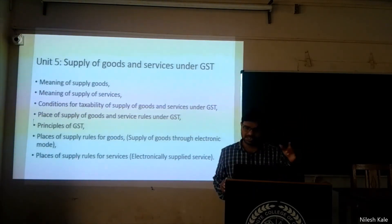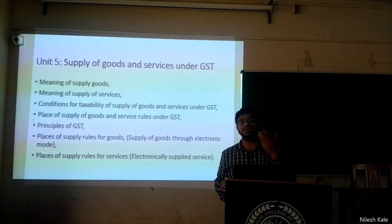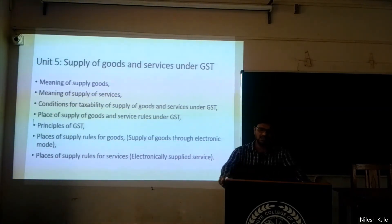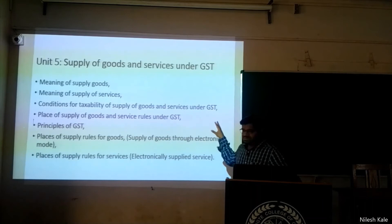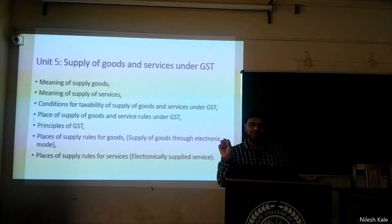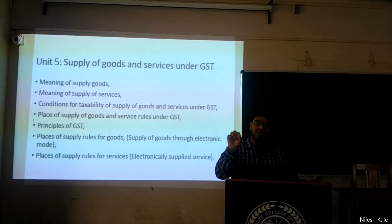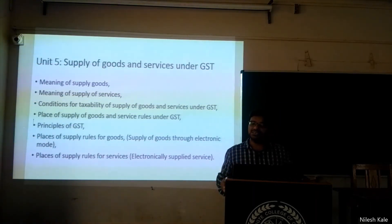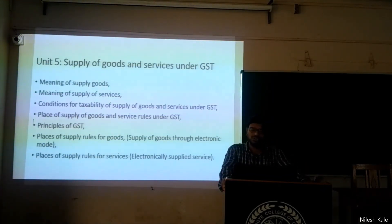Supply in economics is different from supply in GST because we define it specifically. We are going to learn that definition in unit five. Then we will cover the place of supply of goods and services. We need to learn place of supply because we have a dual model of GST — meaning both central government and state government go hand in hand to levy and collect GST. Since both governments are involved, we have to learn whether the supply is made within the state or outside the state. For different services and different routes, there are different rules, which we will learn in unit five.